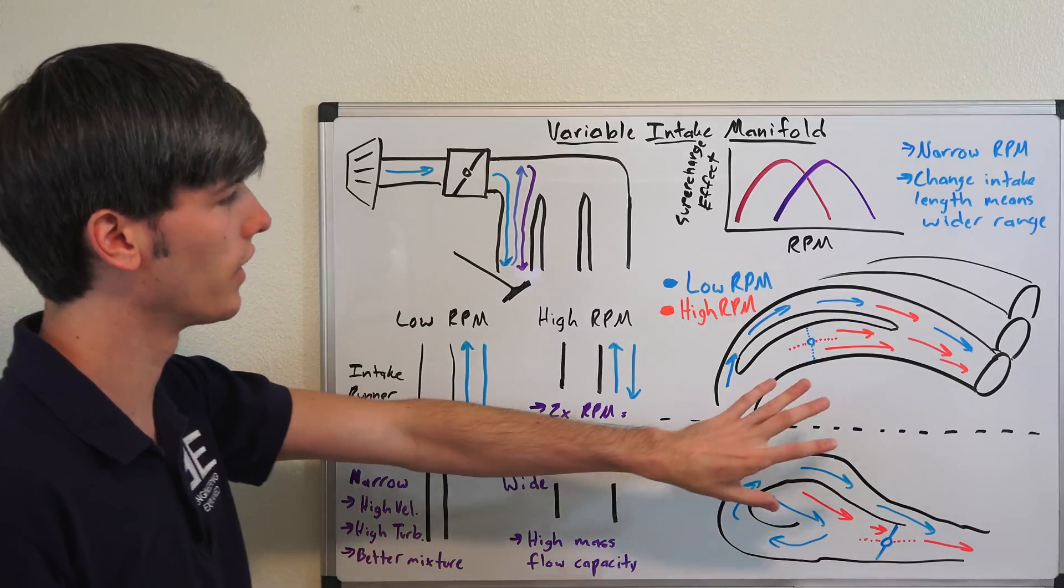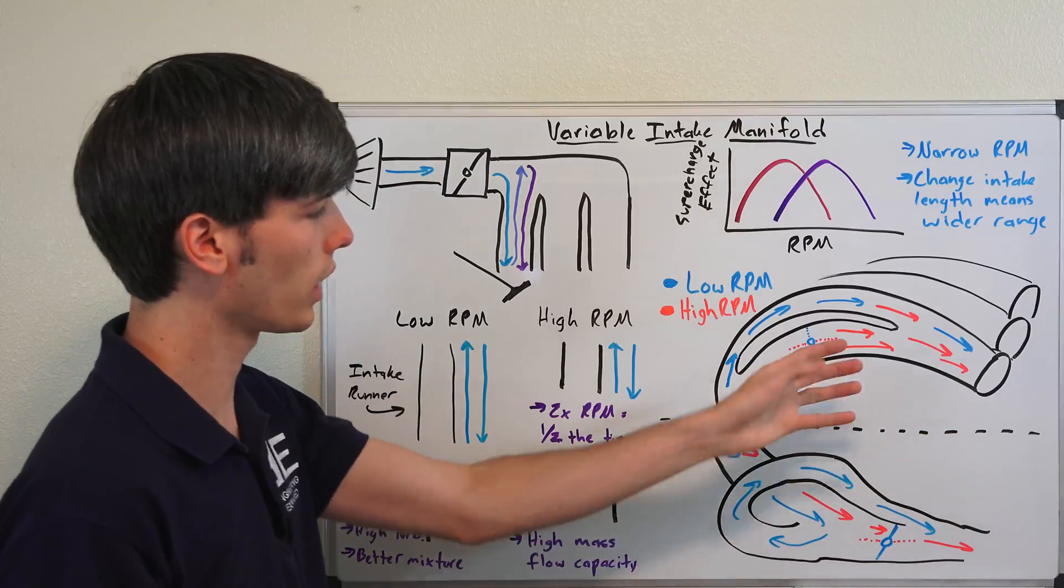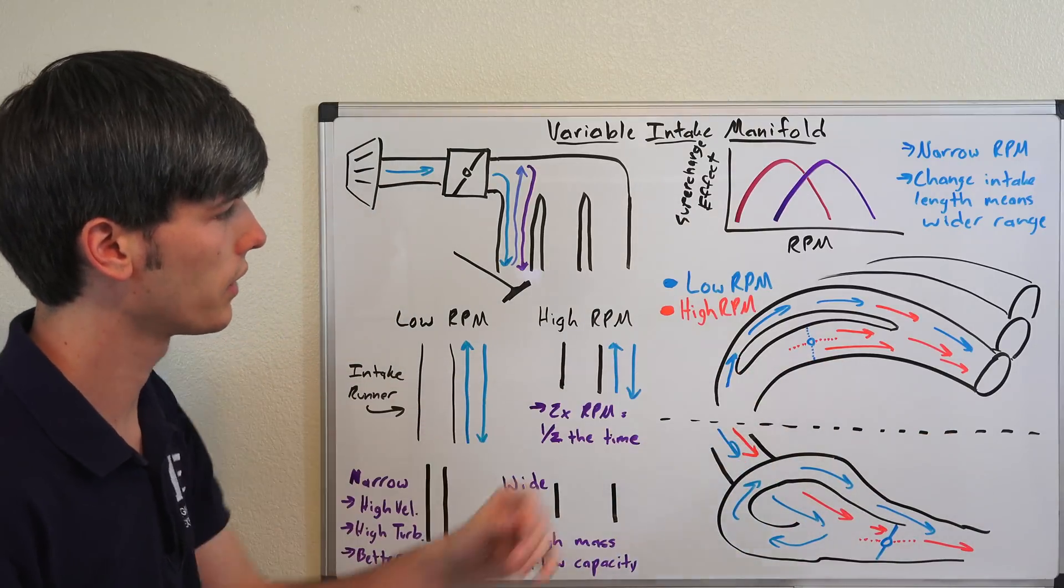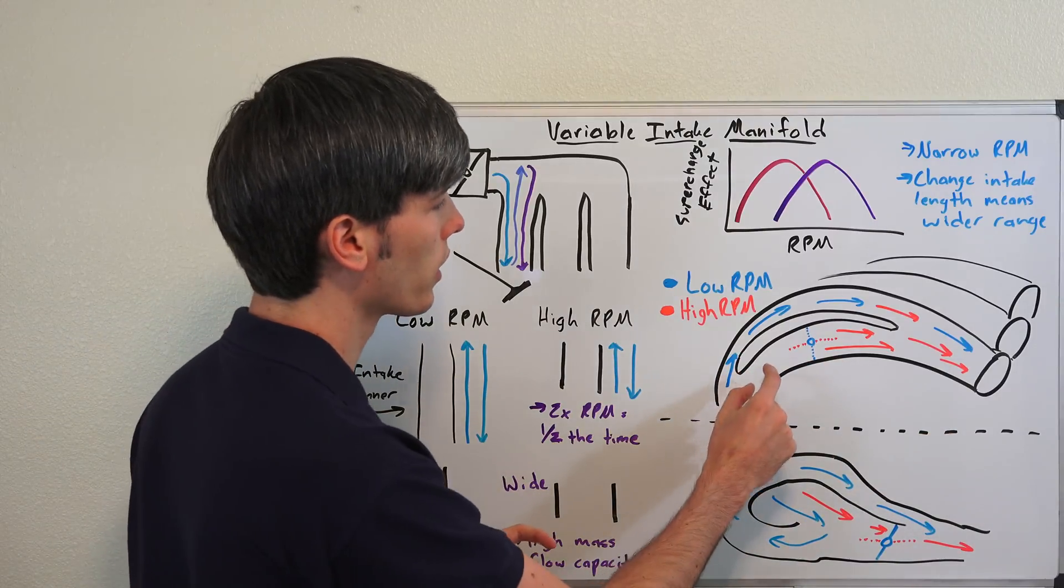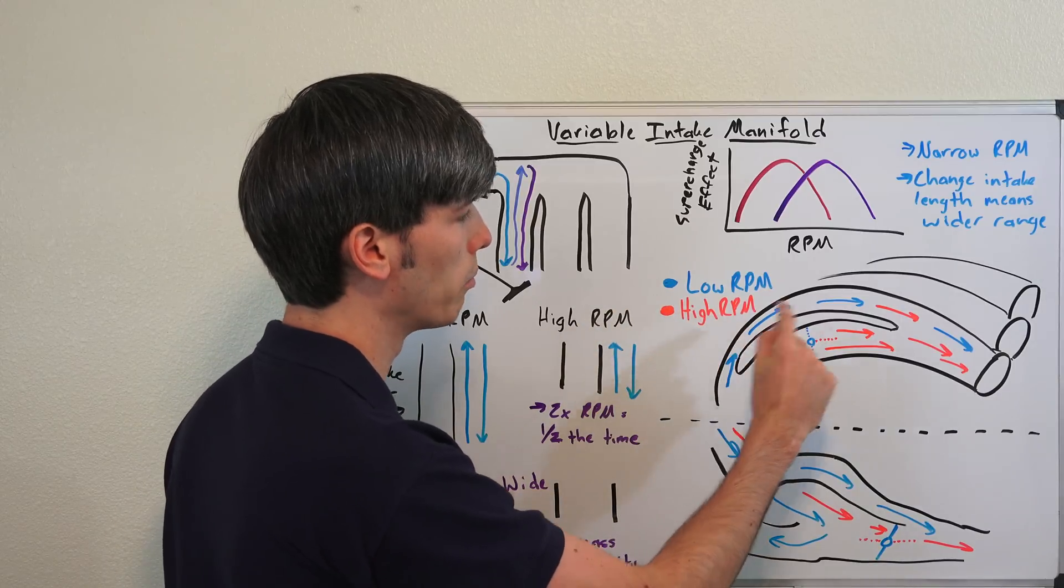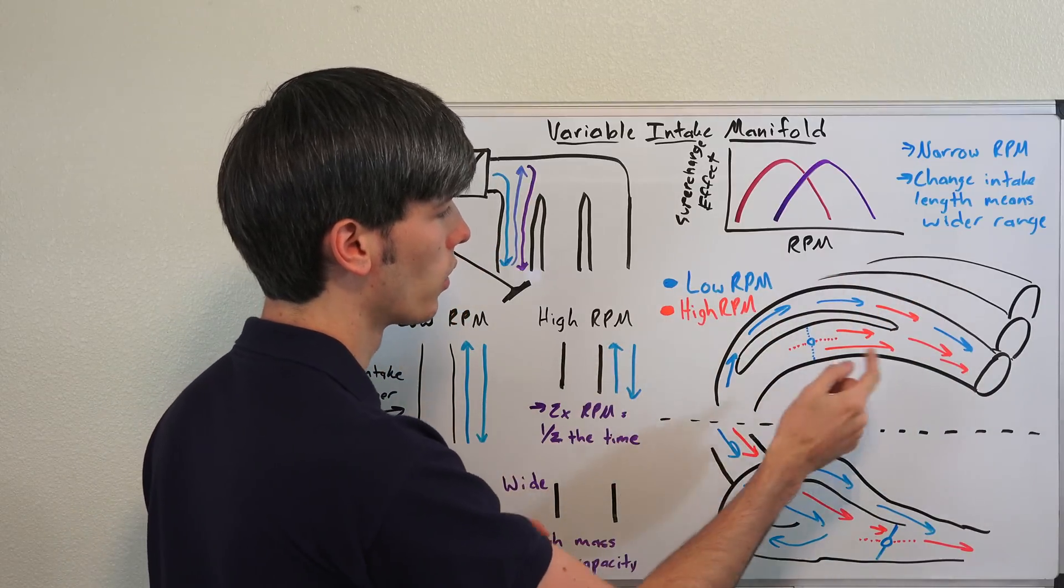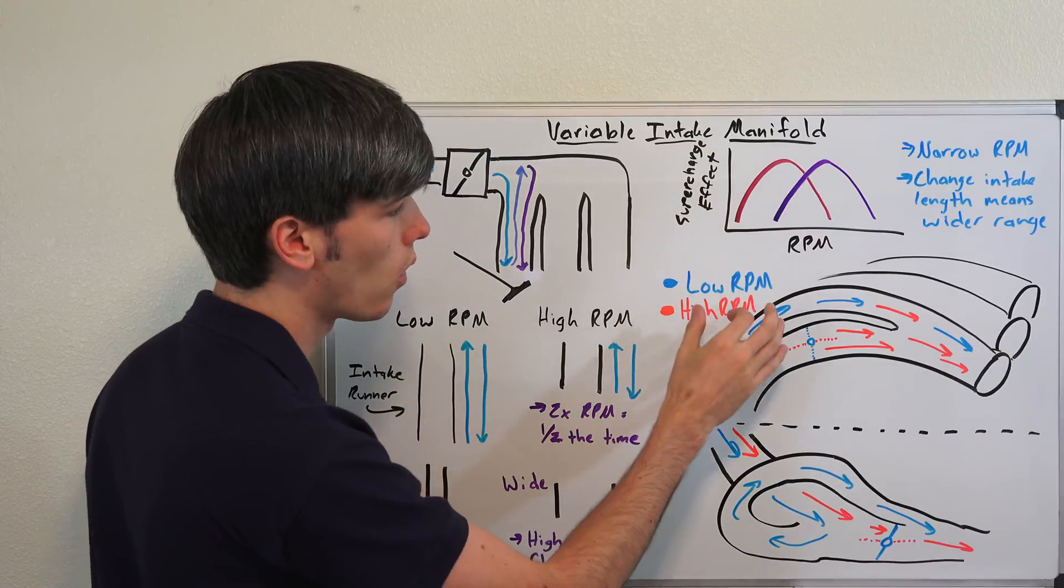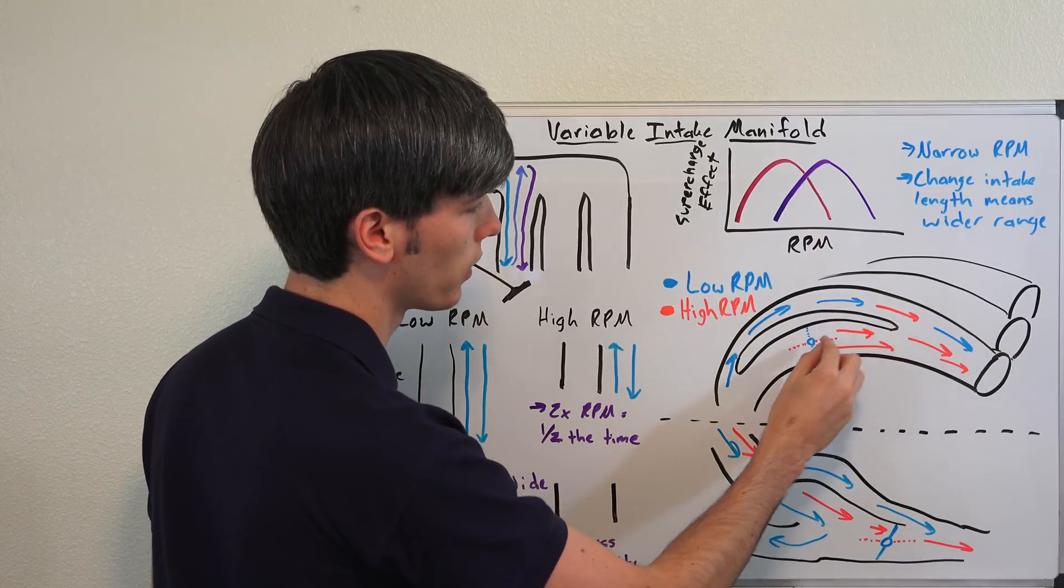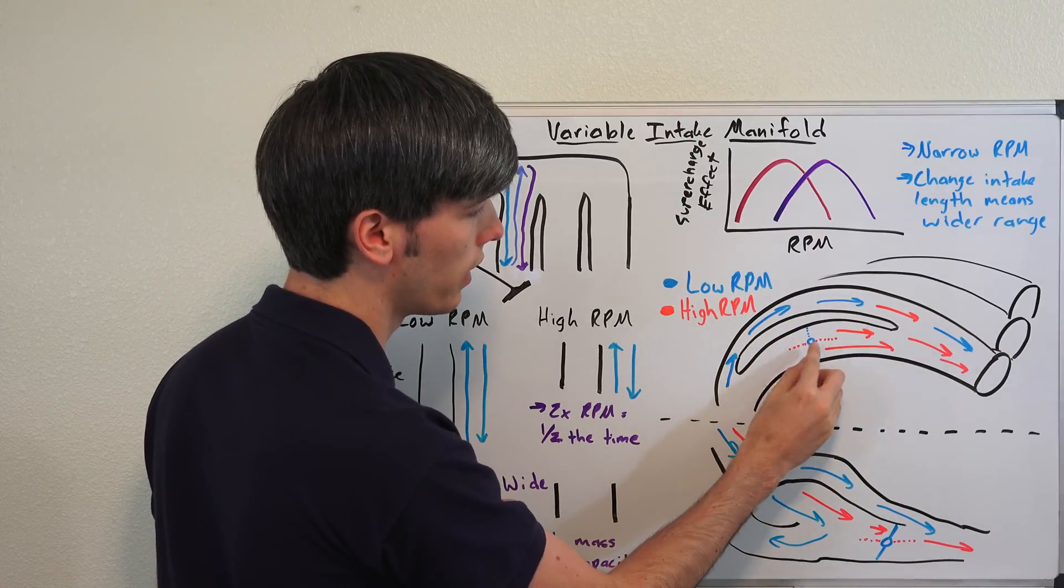So how is this done with an intake manifold? Well I've got two different examples here, different ways of going about it. So here you can see at low RPM we're looking at blue and you're going to have this little valve right here. So here's our intake manifold and then higher RPM is going to be in red. So at a low RPM with this particular intake manifold setup, you're going to have this butterfly valve right here.